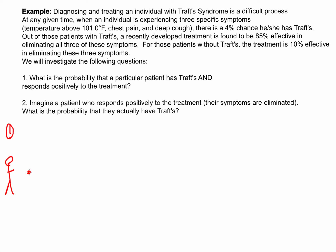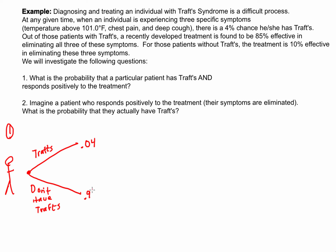At any given time from these symptoms, there are two possibilities: they do have Traff's, or they don't. We were told at the beginning of the problem that there is a 4% chance — so the probability of having Traff's is 0.04, and the probability of not having it is 1 minus 0.04, which is 0.96. So as a patient comes in with these symptoms, there's a 4% chance they have this syndrome and a 96% chance that they don't.